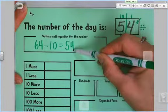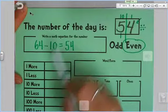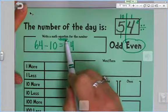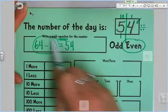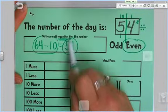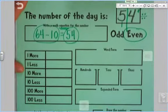So we created a subtraction sentence or a subtraction equation. There's that vocabulary word equation again. Why is that? Because this side is equal or the same as that side.